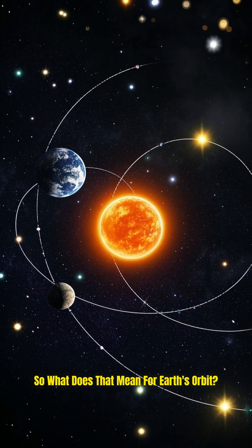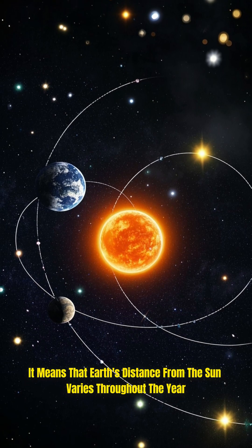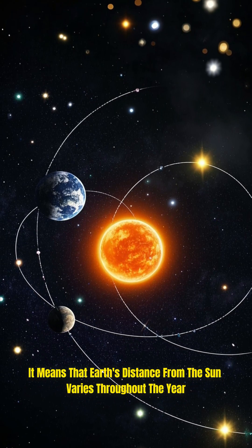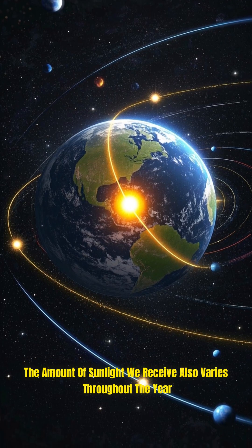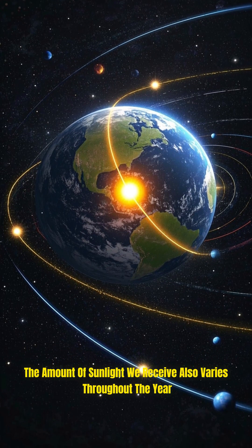So what does that mean for Earth's orbit? It means that Earth's distance from the Sun varies throughout the year. And because of that, the amount of sunlight we receive also varies throughout the year.